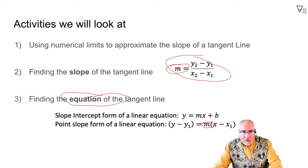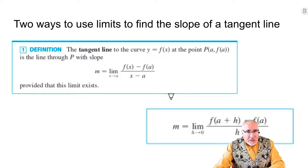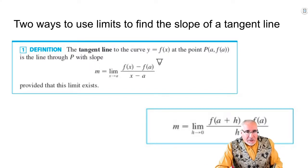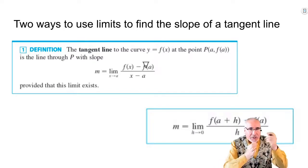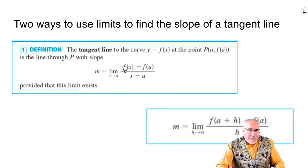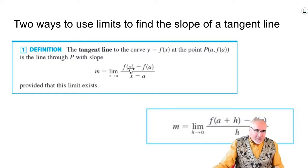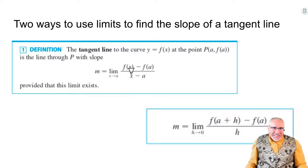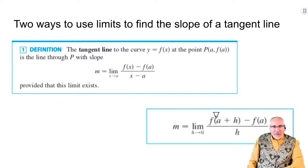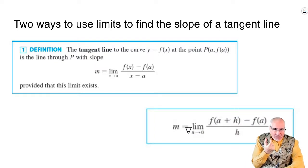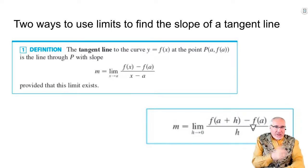So we're going to look at some examples. We'll take this definition: the slope of a tangent line is the limit as we bring one point closer to the other. So x is some value, a is another point, and we bring them closer together — we let x actually go to a. The second form does the same thing but focuses on the point a and a little bit more than a, so we add some distance h.